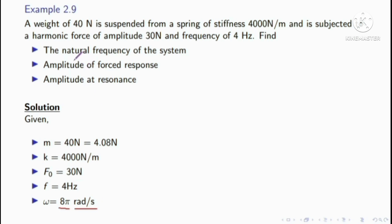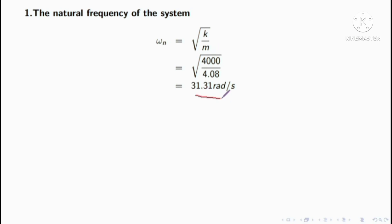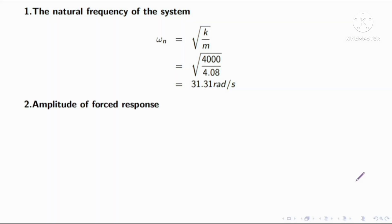Finding the natural frequency of the system. Using the natural frequency equation: omega n equals the square root of k over m. Substituting values gives 31.31 radian per second.